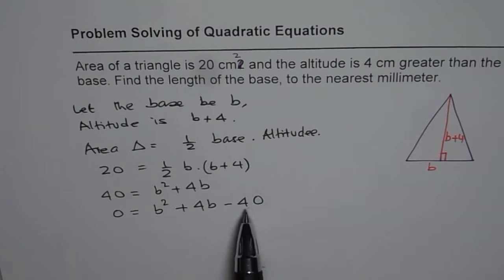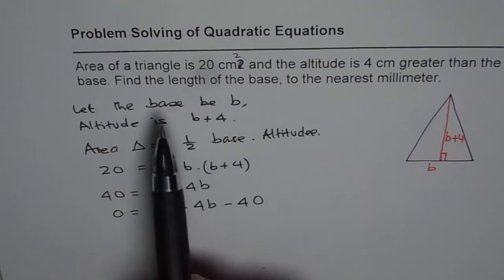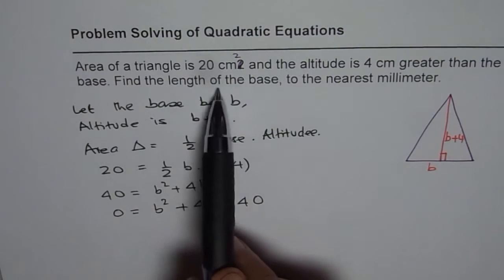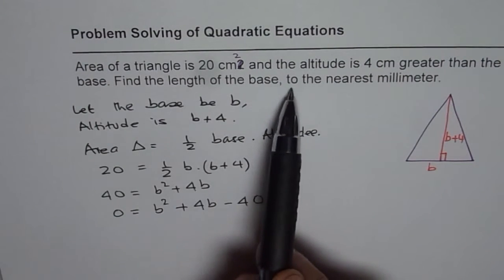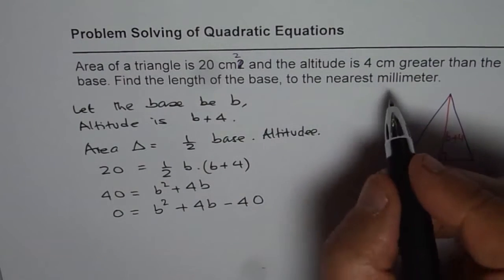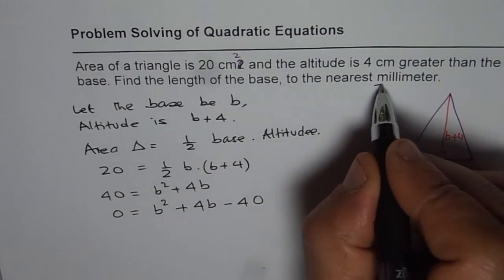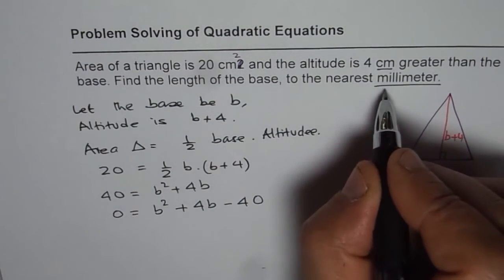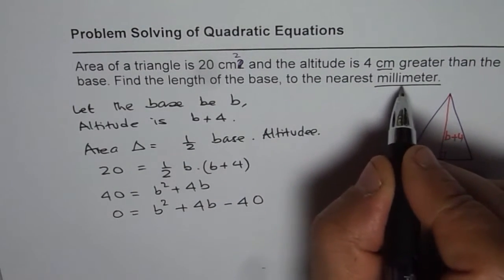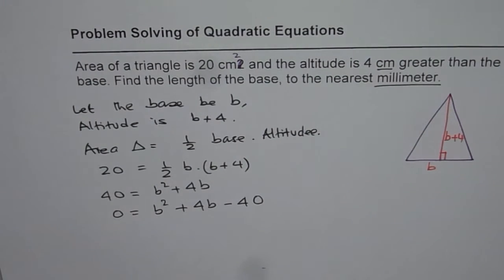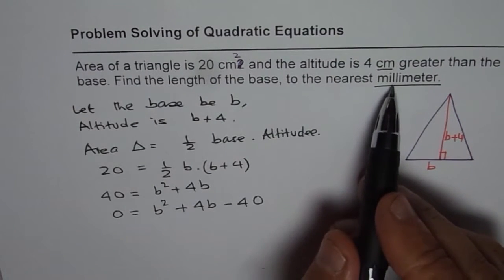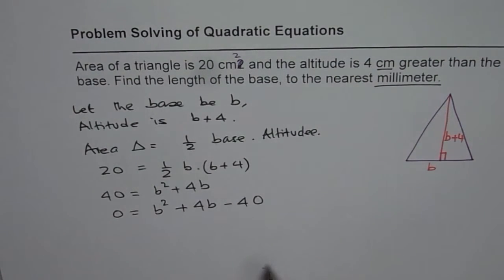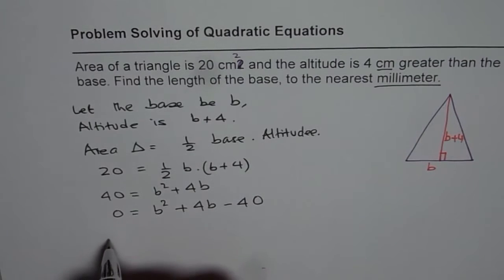The question asks to find the length of the base to the nearest millimeter. That means we need one decimal place in centimeters, which we can only get by using the quadratic formula. So let us apply the quadratic formula.